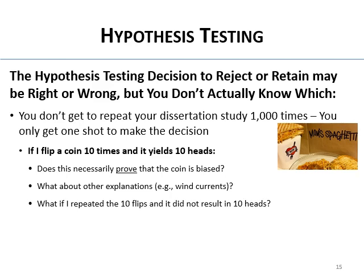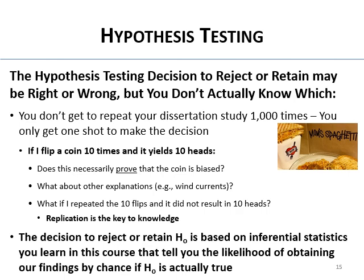If I flip a coin 10 times and get 10 heads, does that prove the coin is biased? No — we would conclude the evidence suggests the coin is biased, but we didn't prove it. There could be other explanations. A single study doesn't prove anything; we just tentatively decide. We have to replicate in order to know what truth is in science. Our decision to reject or retain the null is based on inferential statistics, which tell you the likelihood of obtaining our findings by chance if the null is actually true.